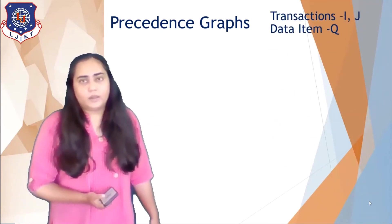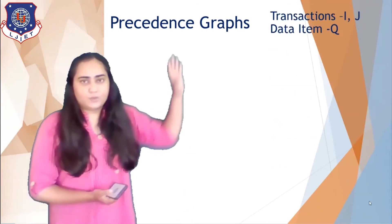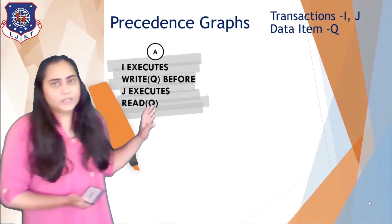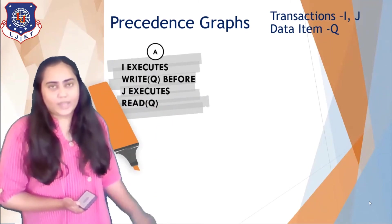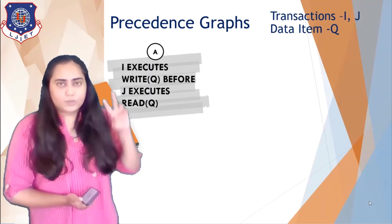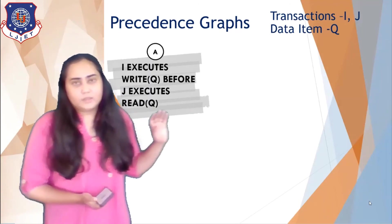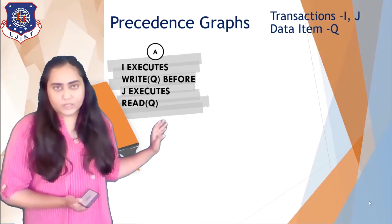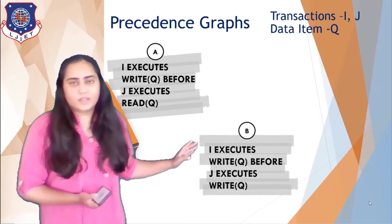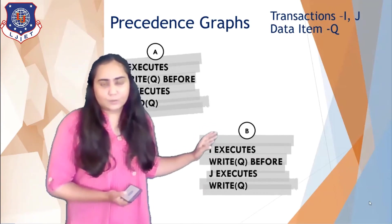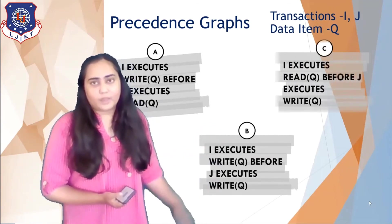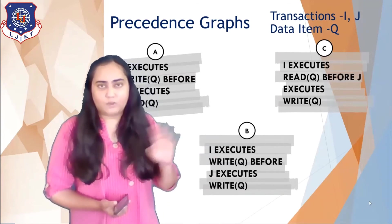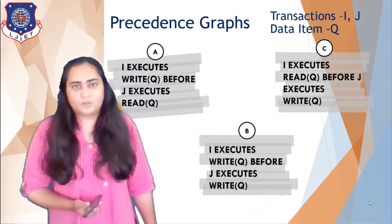Consider again two transactions i and j with data item q. The rules for adding an edge between two transactions in a precedence graph are: (a) if i executes write q before j executes read q, (b) if i executes read q before j executes write q, and (c) if i executes write q before j executes write q. These three rules determine when to draw a directed edge.